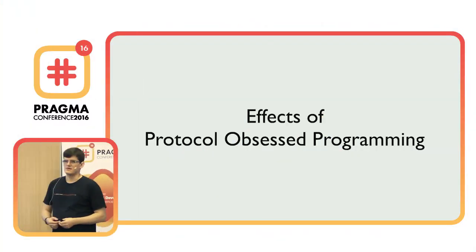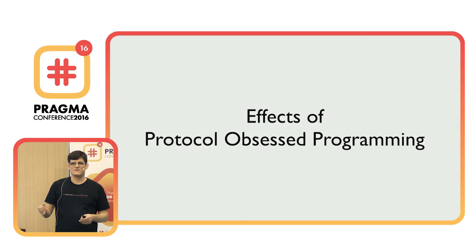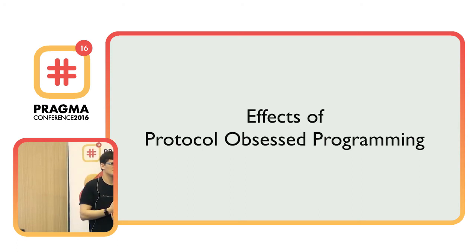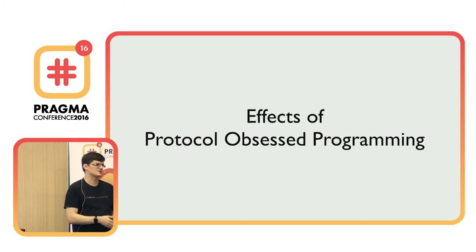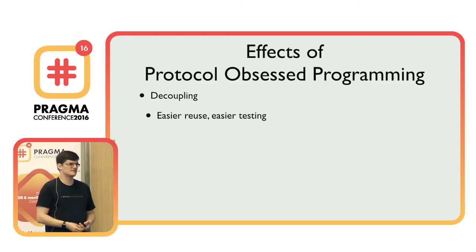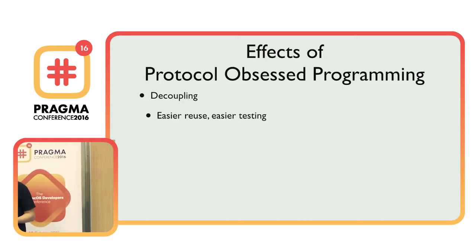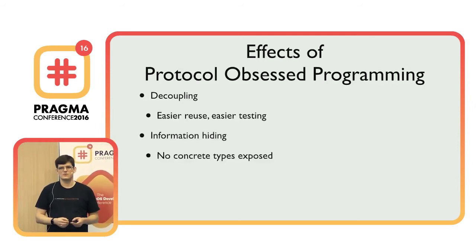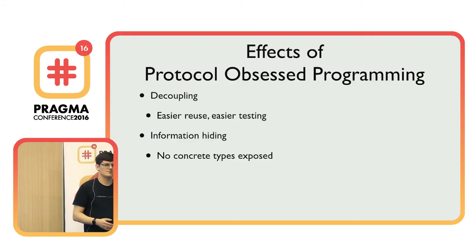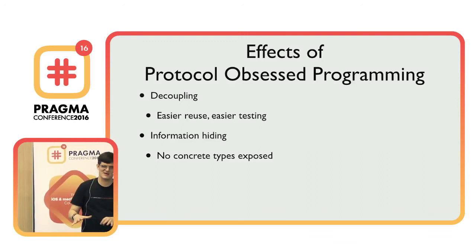What are the effects of all this? From the usage perspective, not that much changed — we have a different way of constructing objects and we set a protocol instead of subclassing, but that's about it. However, from other perspectives a lot has changed. First, we have really good decoupling, which means we can more easily reuse parts of this code and more easily test it. If we can get easier reuse and easier tests without much effort, why not do it?